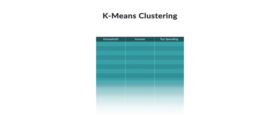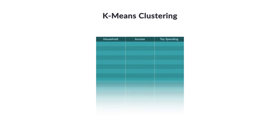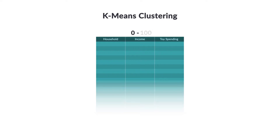Let's start with a data set. Let's say for a group of people we have their household income and how much money they spent on children's toys last year. Assume we've scaled the data, so the lowest household income is 0 and the highest is 100. Also, the lowest toy spending is 0 and the highest toy spending is 100.